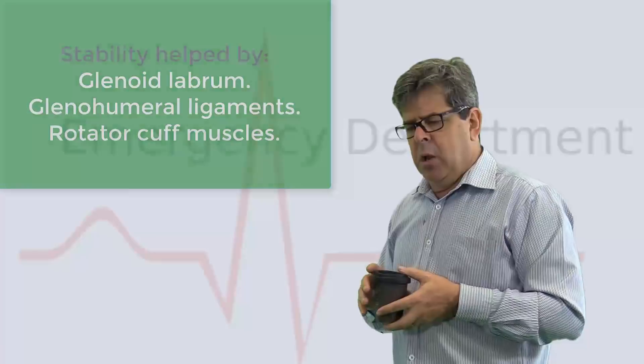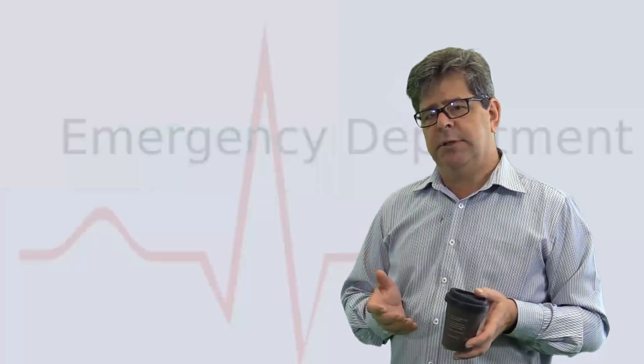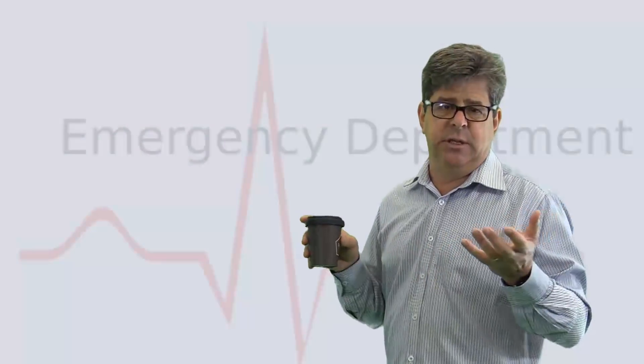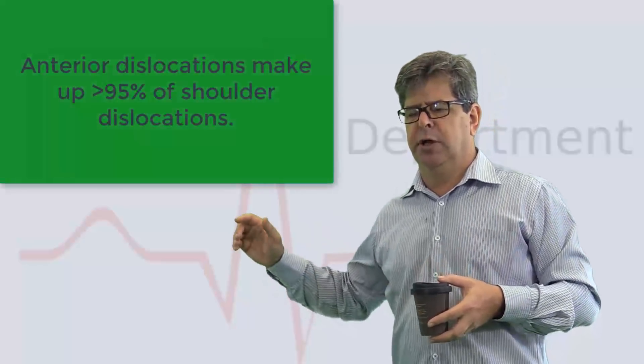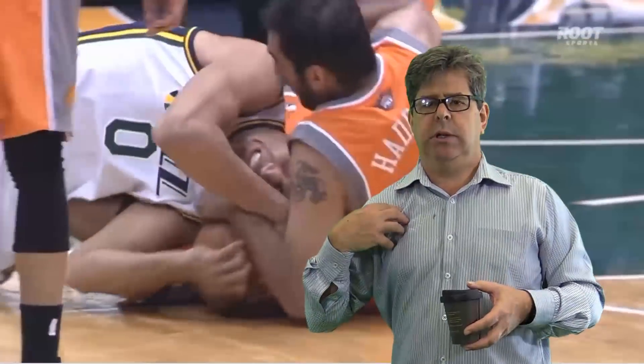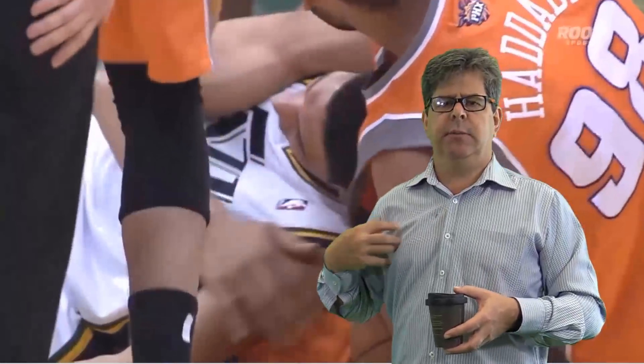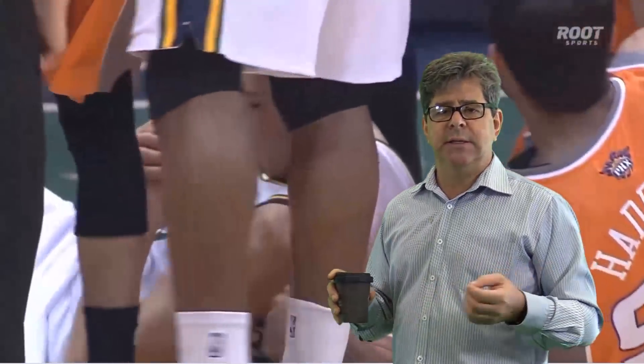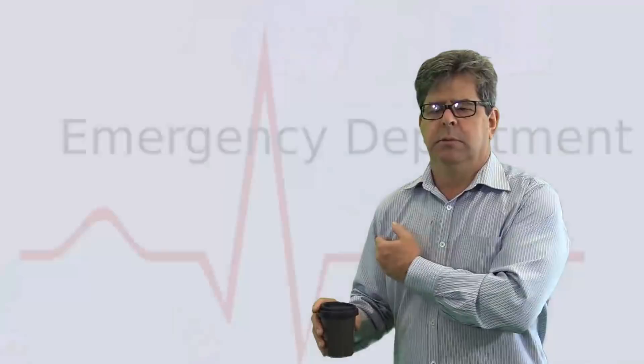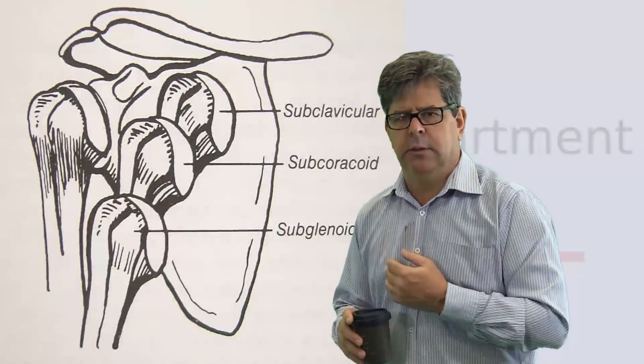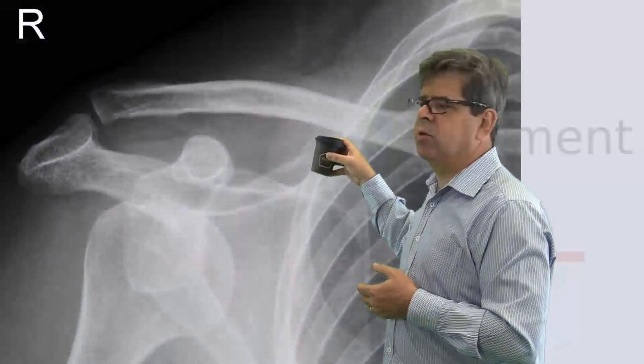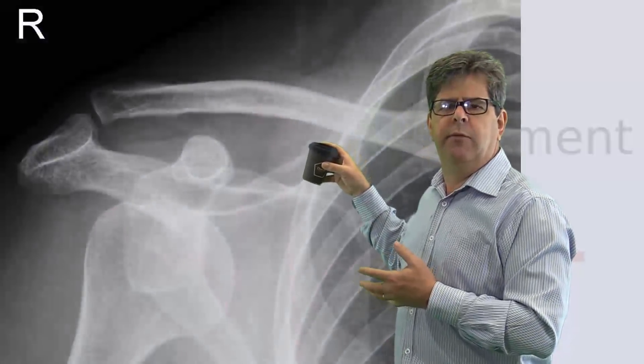Now we're going to talk about the most common type of dislocation, which of course is the anterior dislocation. Anterior dislocations tend to occur when you've got an abducted arm and you're struck from behind, and the humeral head goes out anteriorly and lands somewhere around here. So where it lands is where they name it from: subglenoid, subcoracoid, subclavicular. And you can see these x-rays here of those different positions.